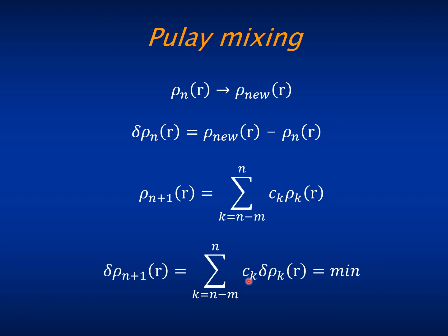So you choose the coefficients C_k to minimize the residuals of the next iteration and input them in the new density. If you do strictly this, then you will not really evolve, because your density will typically be stuck in the same set of previous densities.